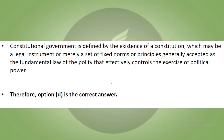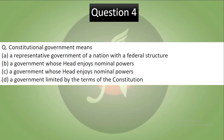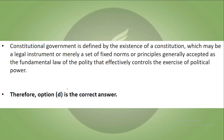The correct answer is D. Constitutional government is defined by the existence of a constitution, which may be a legal instrument or merely a set of fixed norms or principles generally accepted as the fundamental law of the polity, that effectively controls the exercise of political power.